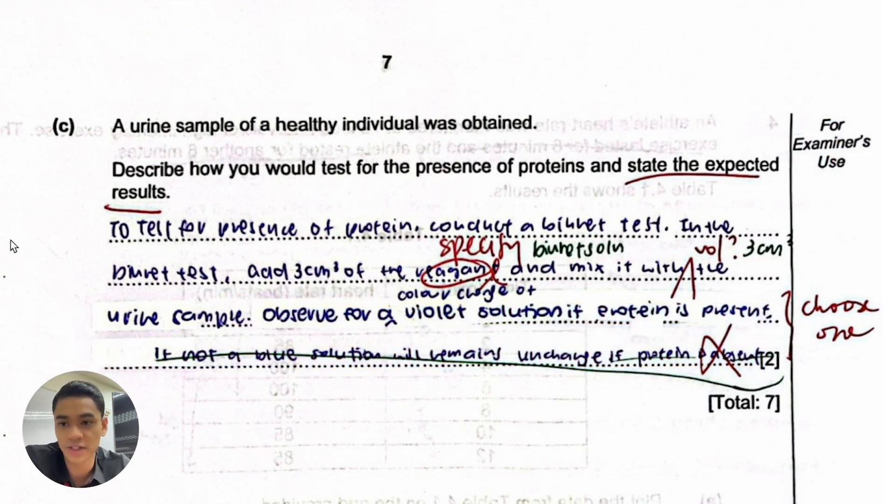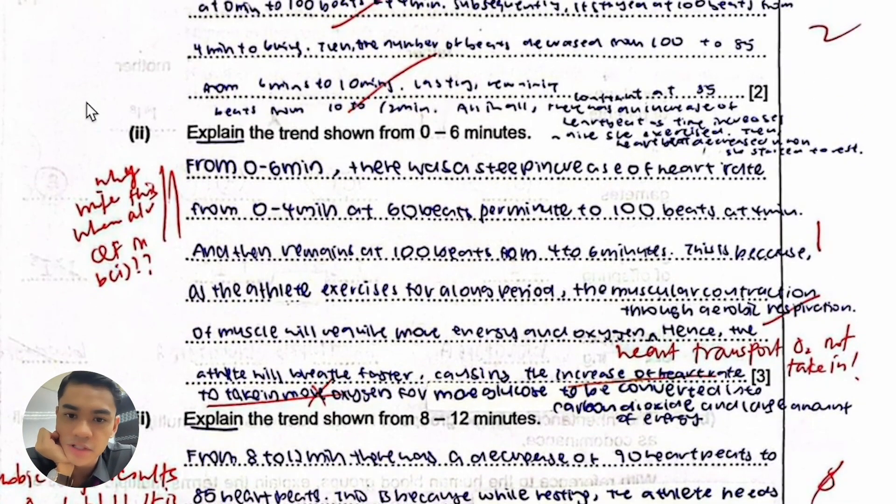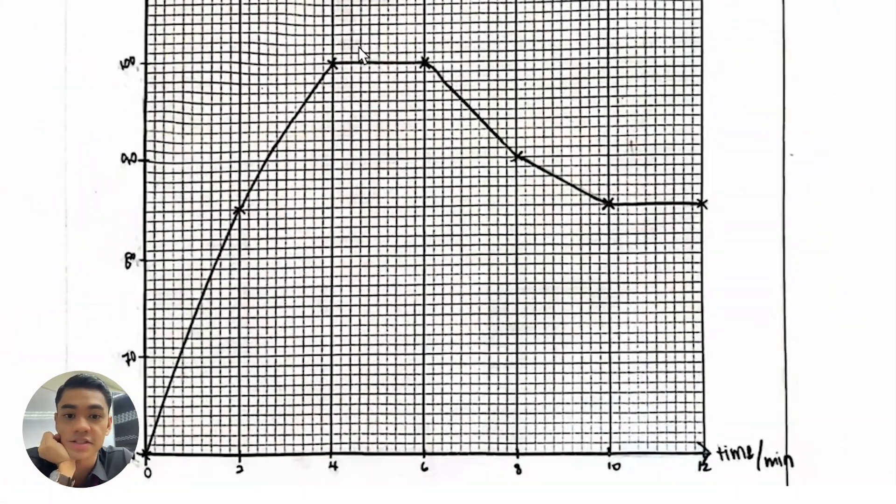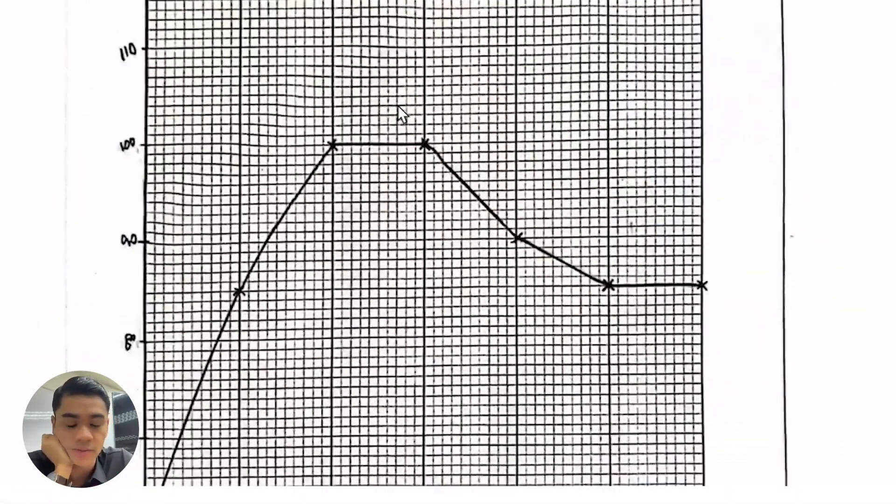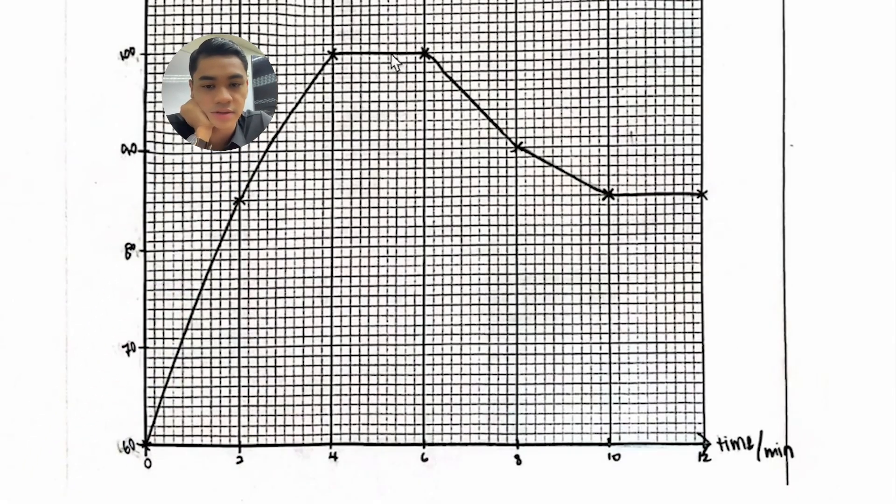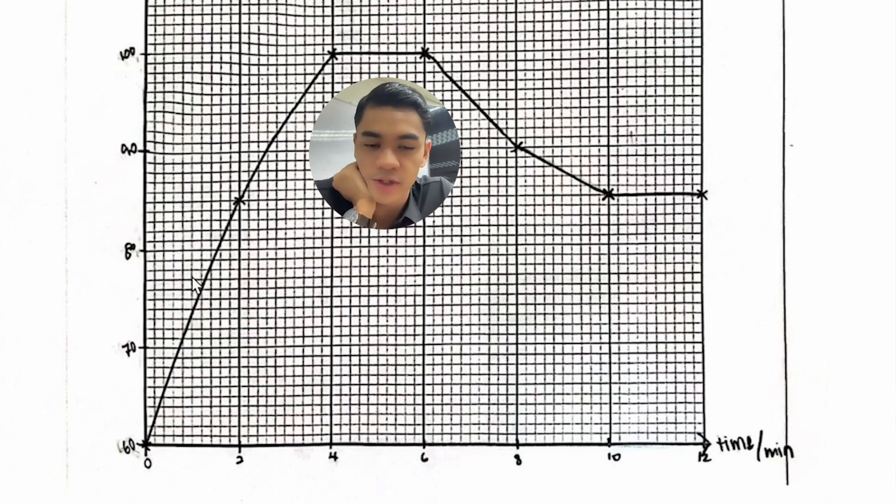In this question, explain the trend from zero to six minutes where he's exercising. You can see there's an increase in heart rate, so basically you give three marks of why does it increase. For me, what I'll do with these three marks is I will talk about the trend, that's one mark description, then I would give two marks to explaining.